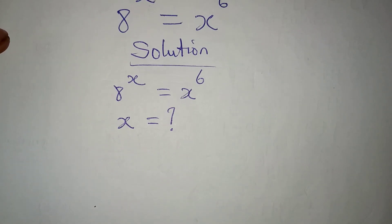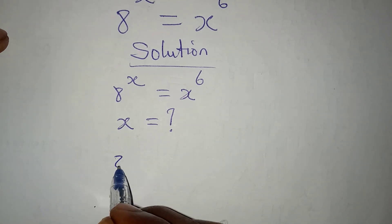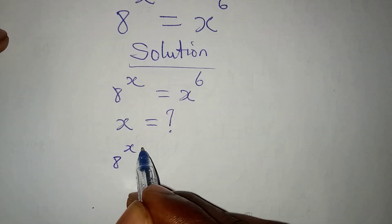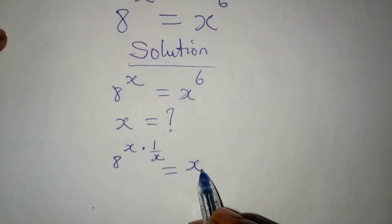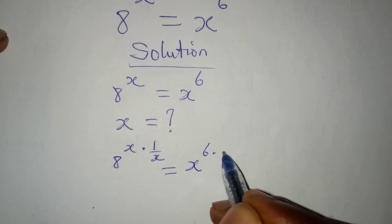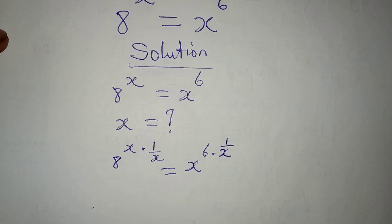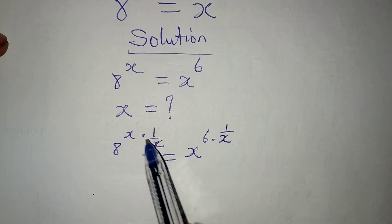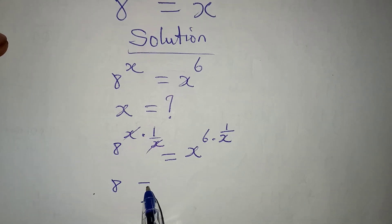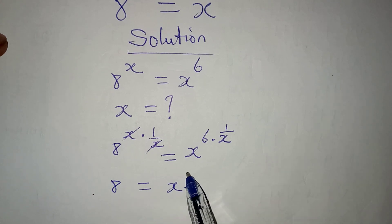To get started, we are going to look for a way to remove this x from the exponent. So I'll have 8 to the power of x multiplied by 1 over x. This will be equal to x to the power of 6 multiplied by 1 over x, because whatever you do on one side, you must do it on the other side. This cancels, and 8 is now equal to x to the power of 6 minus 1, which simplifies as we multiply by 1 over x.